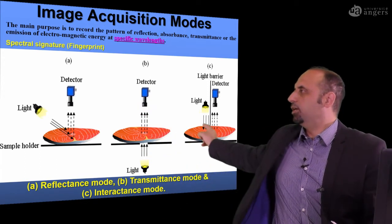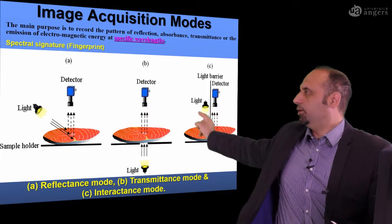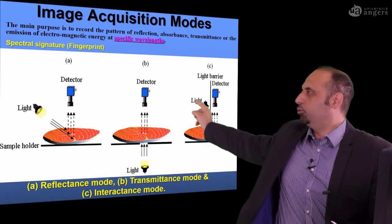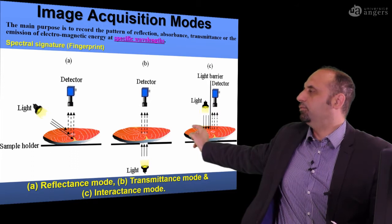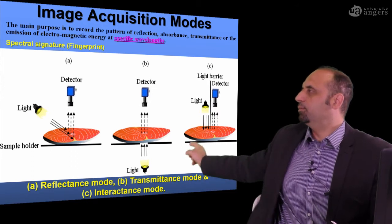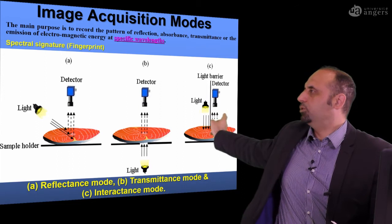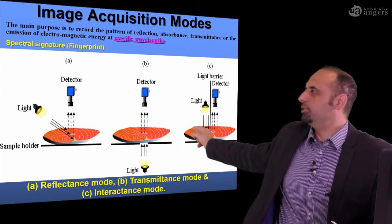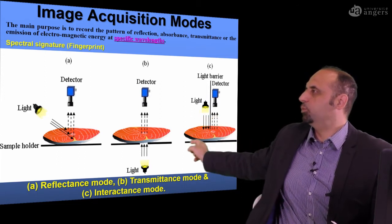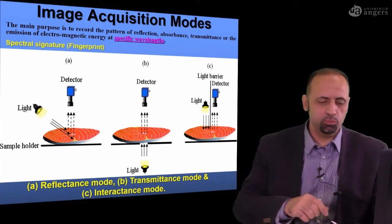If we place a light barrier to prevent direct reflectance from reaching the detector, and the light and the detector are in the same direction, we call this scenario of image acquisition interactance mode.